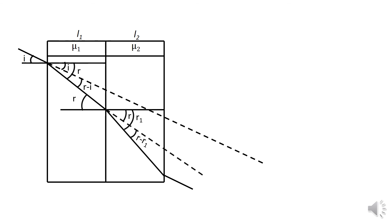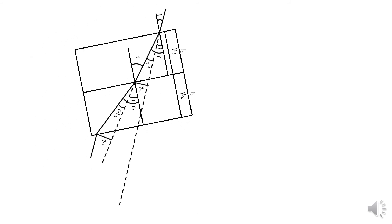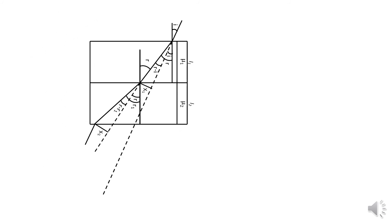So, the first thing we have to say is R1. The first thing we have to say is x1 and x2. So, we have to say that the first thing is x2. So, the first thing we have to say is 1 slab, 2 slab, and 2 slab.